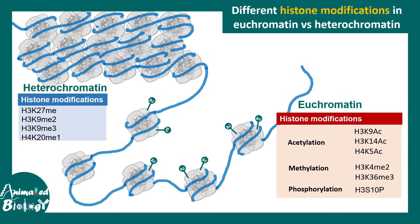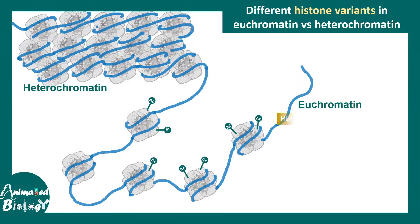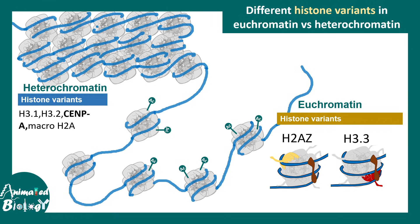In contrast, in heterochromatin there are specific methylation patterns peculiar to these regions which further help chromatin compaction. There are also specific histone variants that discriminate between different chromatin regions. In euchromatin, one can find H2AZ at the transcription start site and H3.3 along gene bodies, promoters, or regulatory elements of transcriptionally active genes. Heterochromatin-associated variants include H3.1, H3.2, CENP-A (also an H3 variant), and macroH2A.